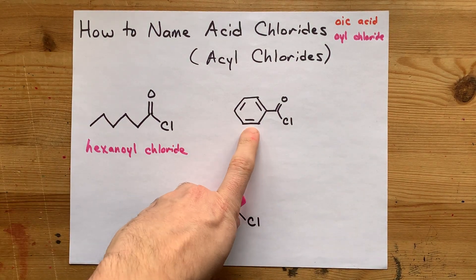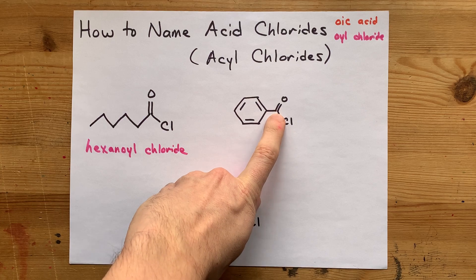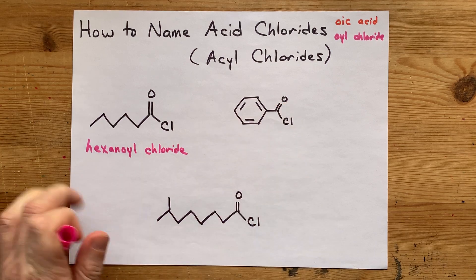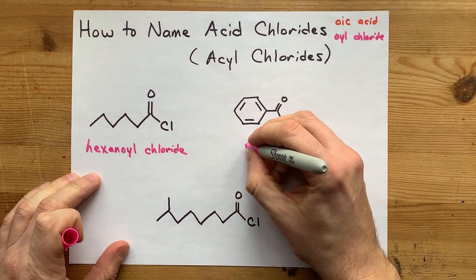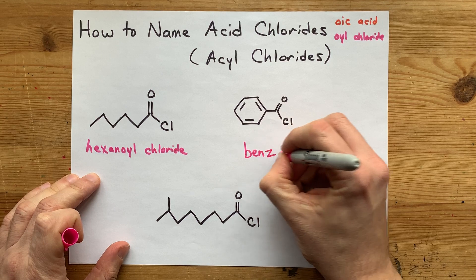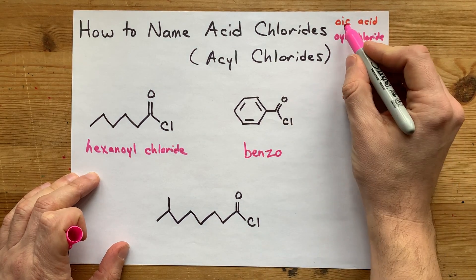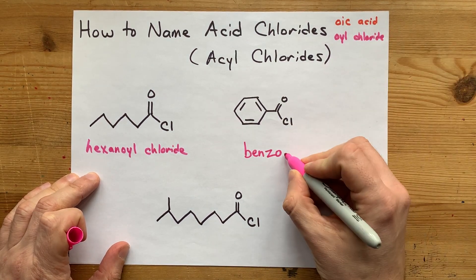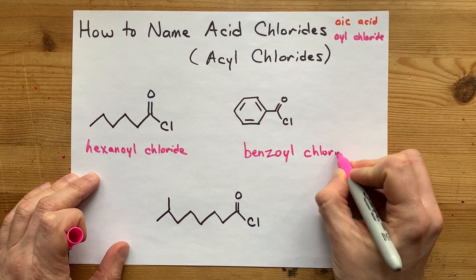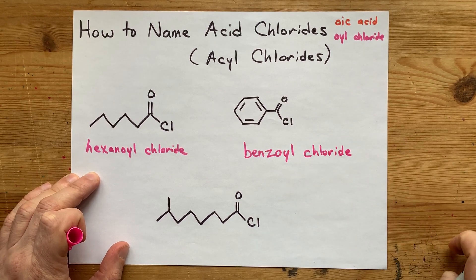This is benzene. When you have a COOH on it, it gives you benzoic acid. We're going to replace the '-ic acid' with '-oyl chloride,' and so this makes what you call benzoyl chloride.